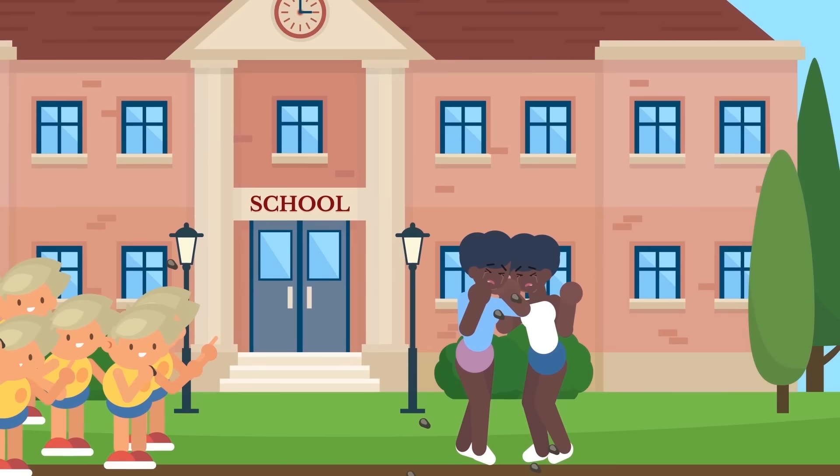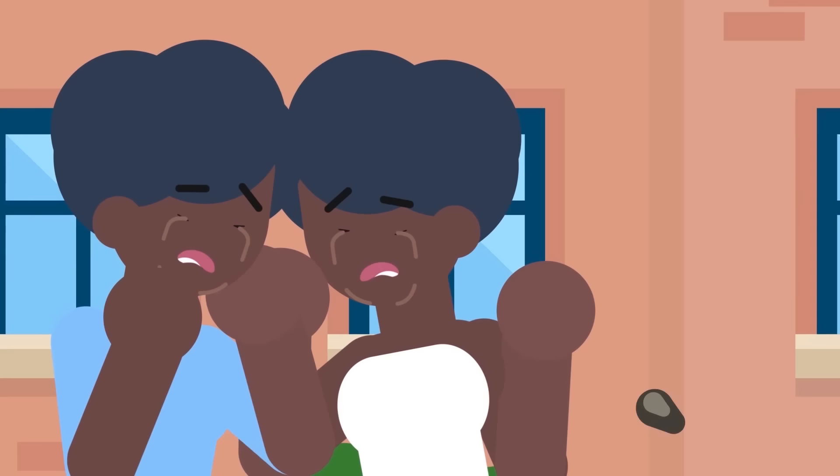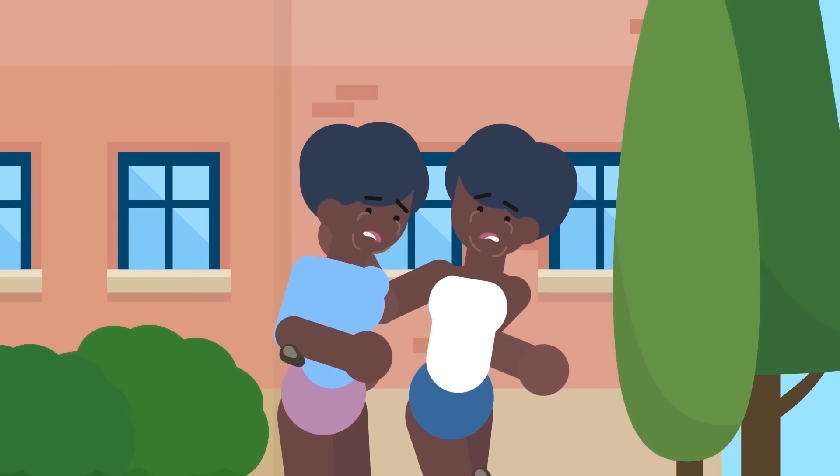This is why the kids decided they wouldn't speak to anyone else. When they did speak, they spoke in a language only they could understand. There is actually a word for twins creating their very own language, and this is called Cryptophagia. Crypto means secret and phagia means speech.